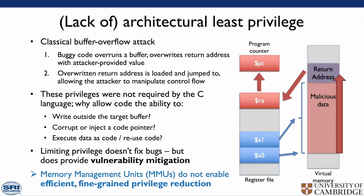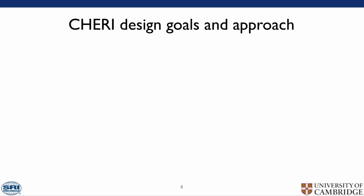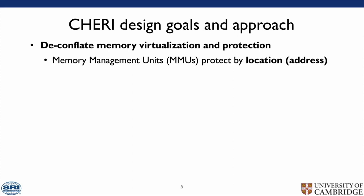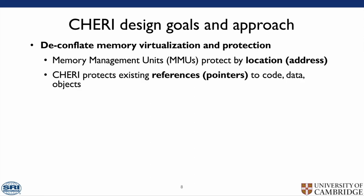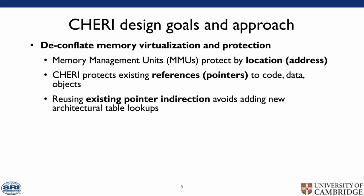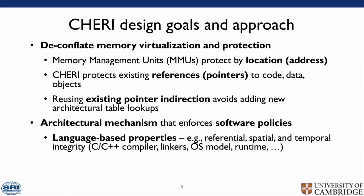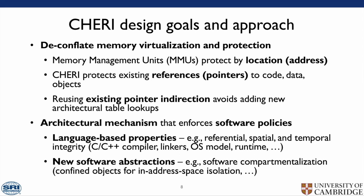An important thing to know is that memory management units do not enable efficient fine-grained privilege reduction. CHERI's design goals are to deconflate memory virtualisation and protection. Memory management units protect by location or address, whereas CHERI protects by reference or pointers to code and data. We reuse the point of indirection to avoid adding new architectural table lookups. This is an architectural mechanism that enforces software policies, allowing for language-based properties such as referential, spatial, and temporal integrity in C and C++ compilers, linkers, and operating system models. It also allows for new abstractions such as software compartmentalisation and confinement of objects for in-address-space isolation.